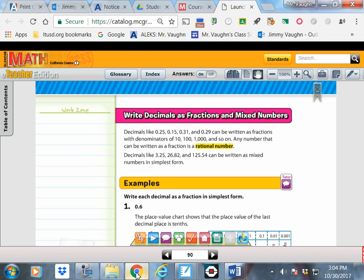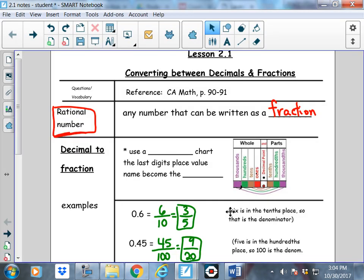Any number that can be written as a fraction. Your textbook has a little bit more details. Decimals like 2,500, 1,500, et cetera, can be written as fractions with denominators of 10, 100, 1000, and so on. Any number that can be written as a fraction is a rational number. Later on, you'll learn about irrational numbers, but just get familiar with that term a little bit. Rational number.